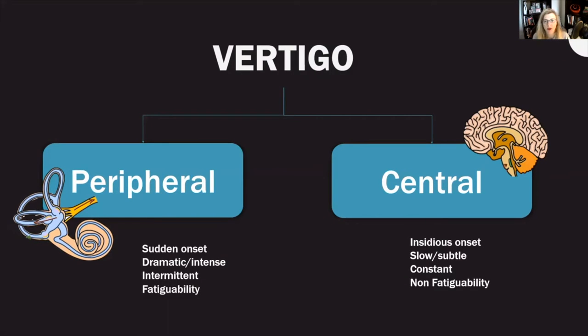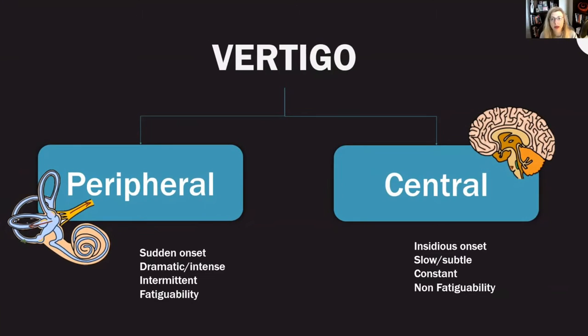She states that peripheral causes are dramatic and intense — these people can't walk down the hallway, and this happens suddenly. This is exactly how a posterior circulation stroke can present. Sure, vestibular neuritis can present this way as well, but patients with vestibular neuritis should be able to walk unaided — they'll be wobbly, but they should be able to walk down the hall. Any patient who can't walk down the hall needs a stroke workup.